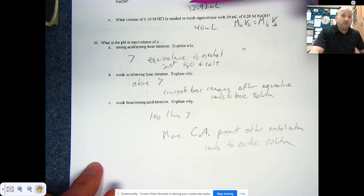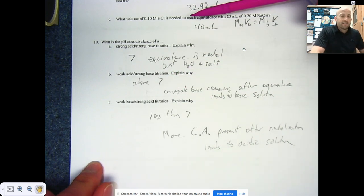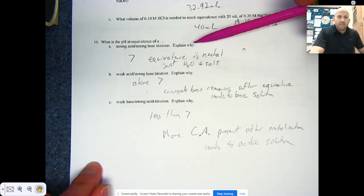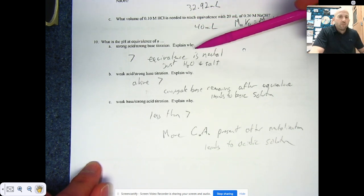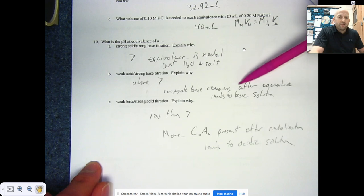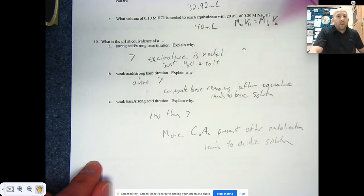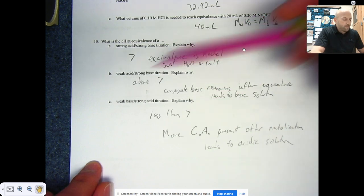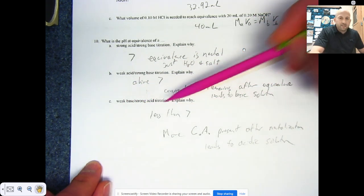A weak acid strong base titration, explain why it's going to be above seven. Because what happens is it starts off higher because of the weak acid, and then it's neutralized. And then what we have left is a presence of more conjugate base after it has been neutralized. We have more conjugate base which happens to be strong, and what it's going to do is it's going to have a greater affinity for the hydrogen on the water and it's going to pull that off, and now we have more hydroxide. Weak base strong acid, it's going to be the opposite. CA means conjugate acid.